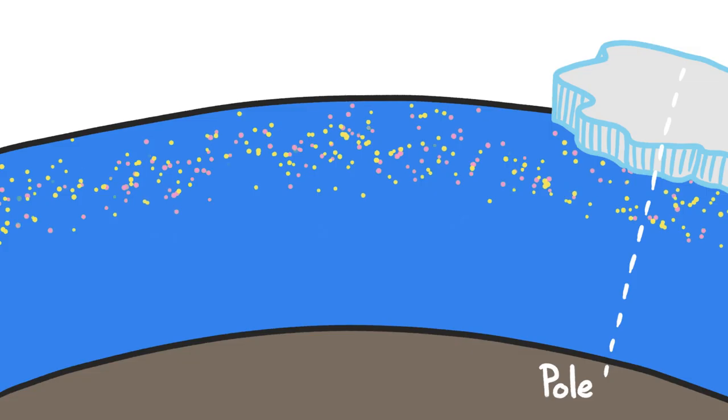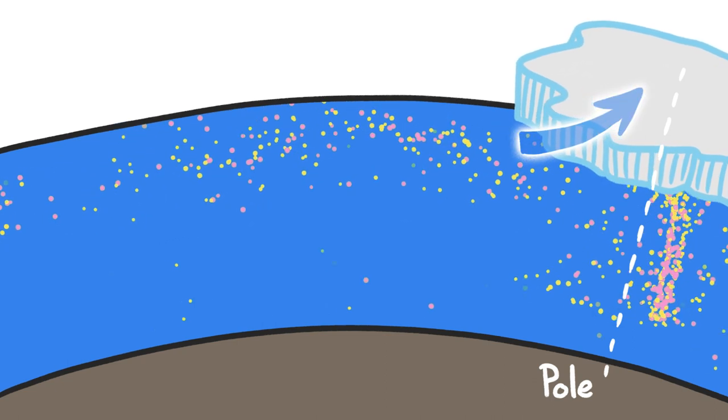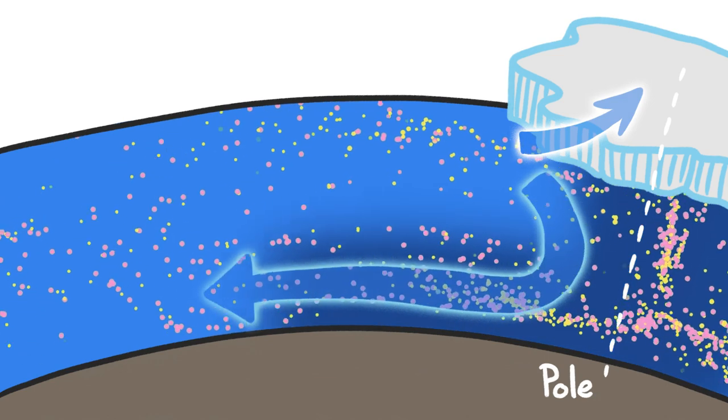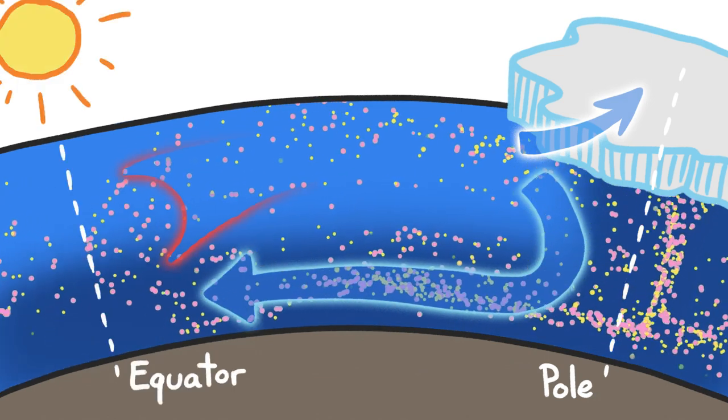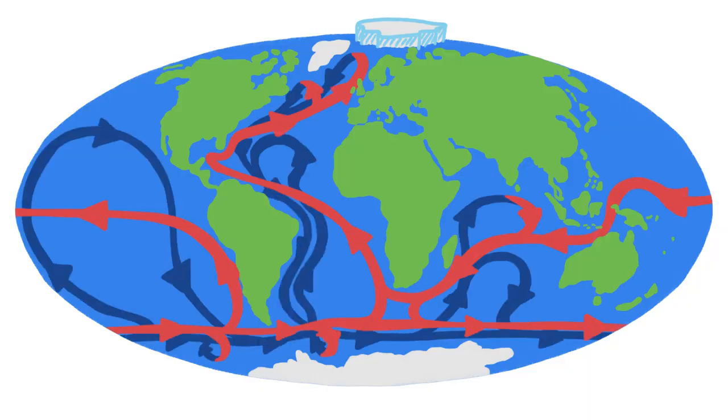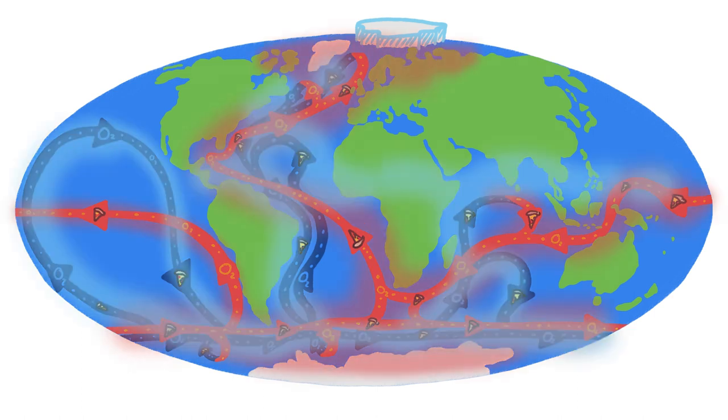And those ions help keep our oceans humming along. As seawater at the poles freezes into ice, ions get left behind in the water, increasing its density. That water sinks below less ion-rich, less dense water, which in turn pulls in warm seawater all the way from the equator to take its place. This exchange moves nutrients and oxygen all around the world, and helps warm the poles and cool the equator.